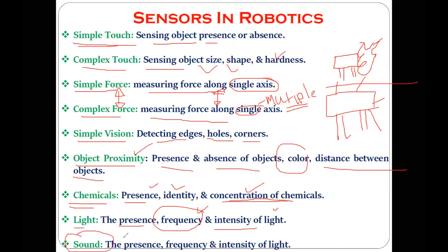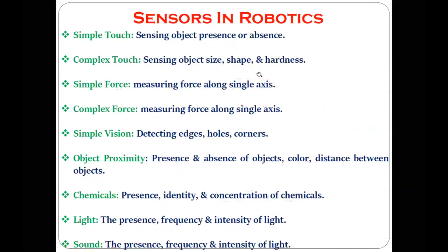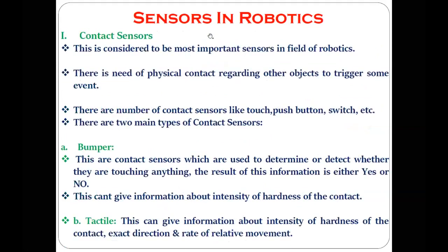Similarly, there are sound sensors which can give information about the presence, frequency, and intensity of sound. These are the general kinds of sensors available — just an overview. Now there are four to five important sensors utilized in robots, which are also used in homes, cars, aircraft, and ships.